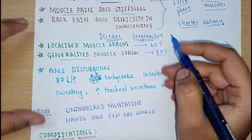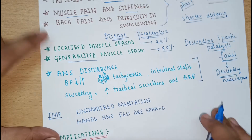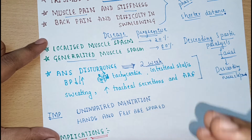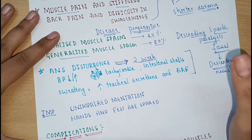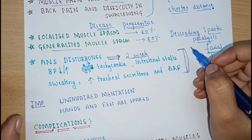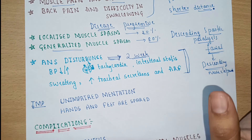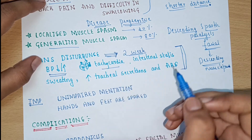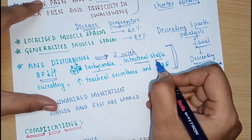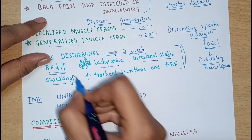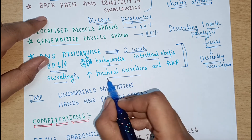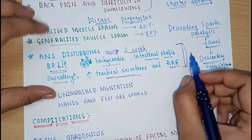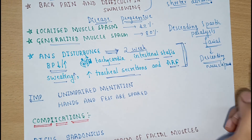After about two weeks, tetanus reaches a severe condition and produces severe autonomic nervous system disturbance. Once the ANS is affected, there can be fluctuation in blood pressure — it may fall or rise. There can be tachycardia, intestinal stasis with reduced bowel movements, severe increased sweating, increased tracheal secretion, and also chances of acute renal failure. This is the third phase — the severe phase of the disease.